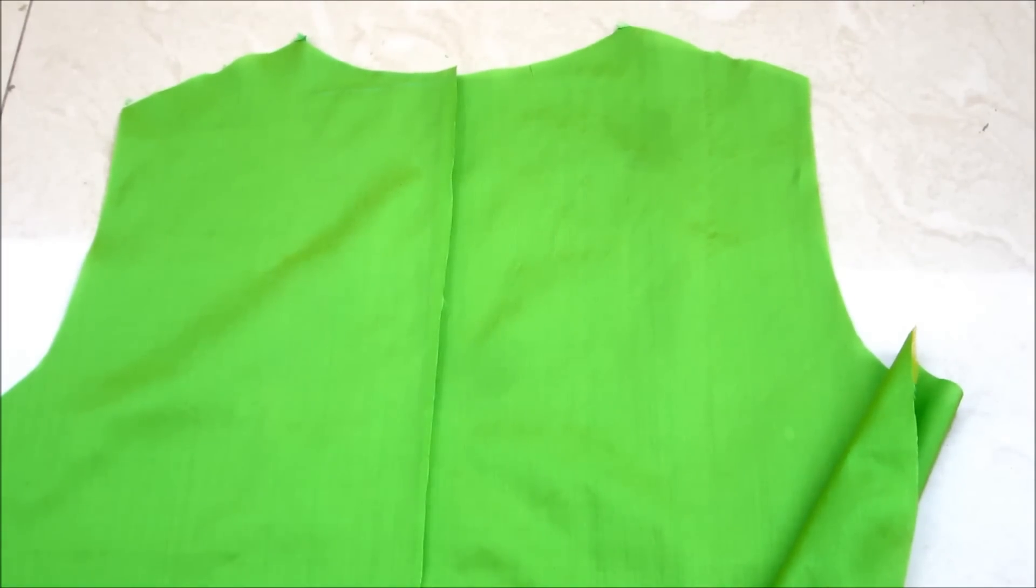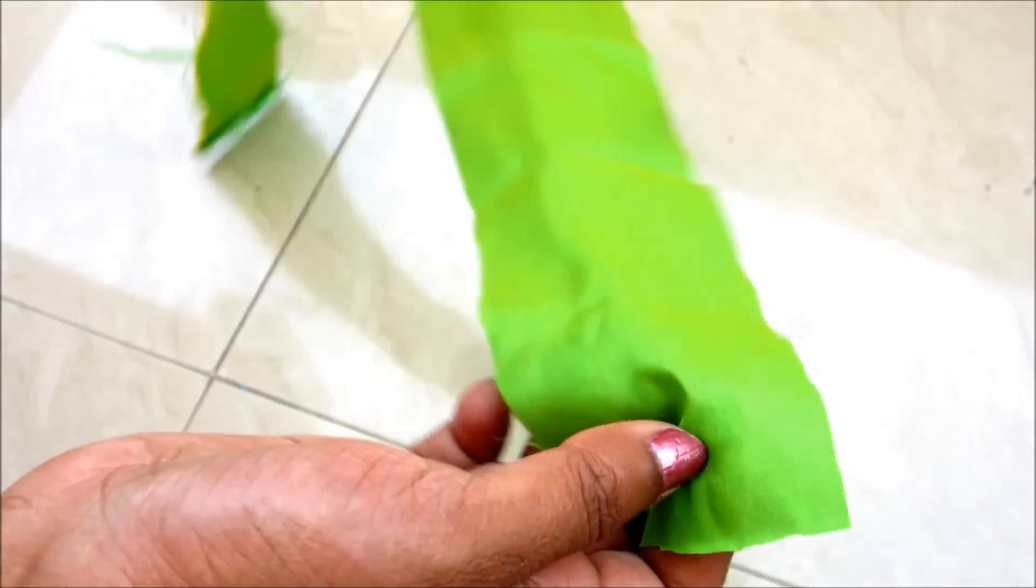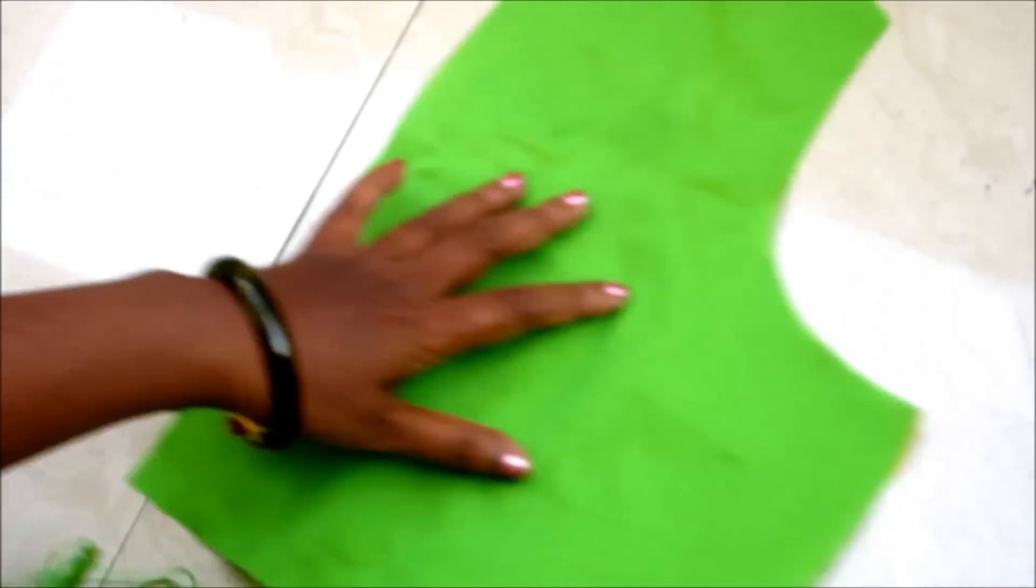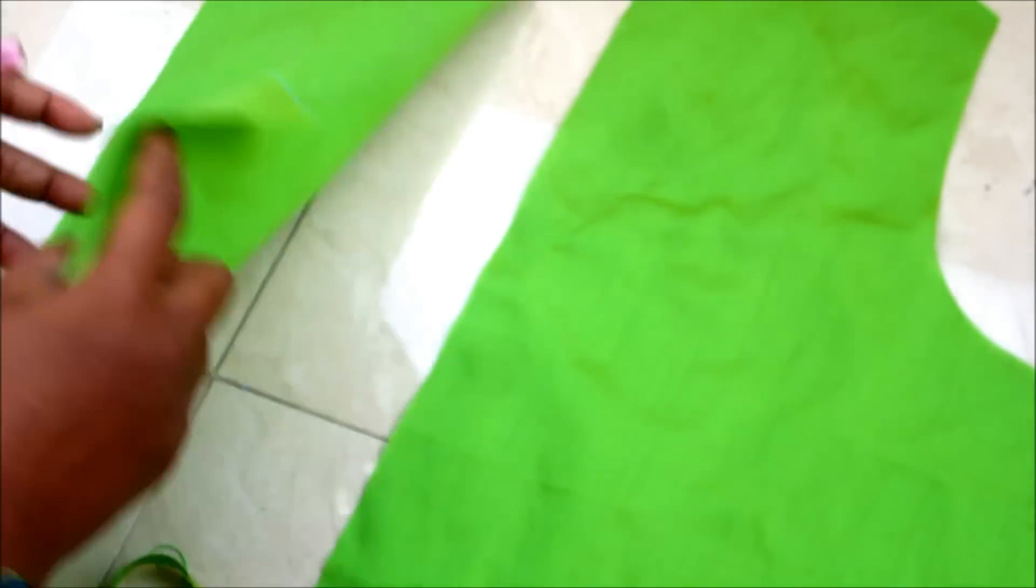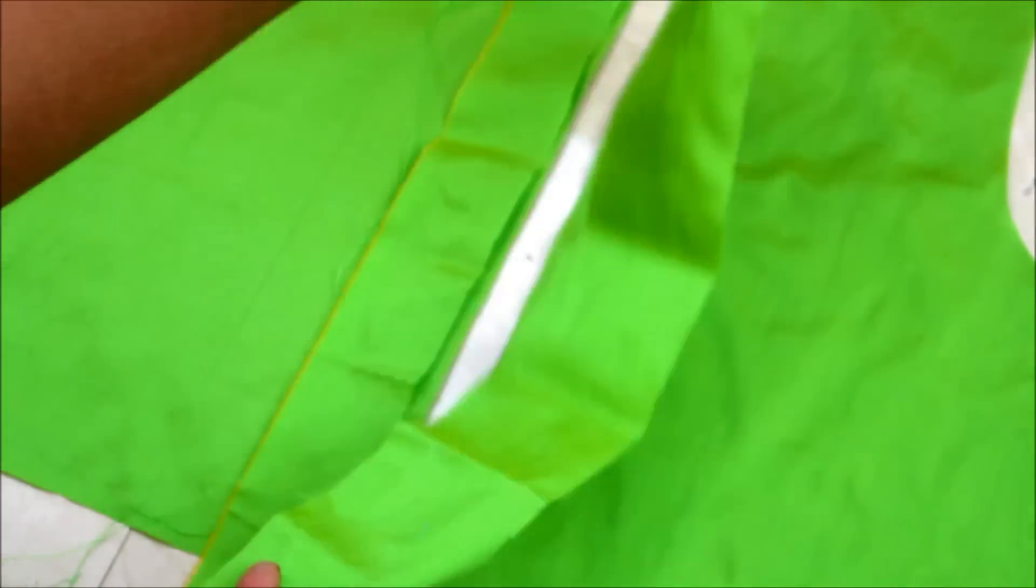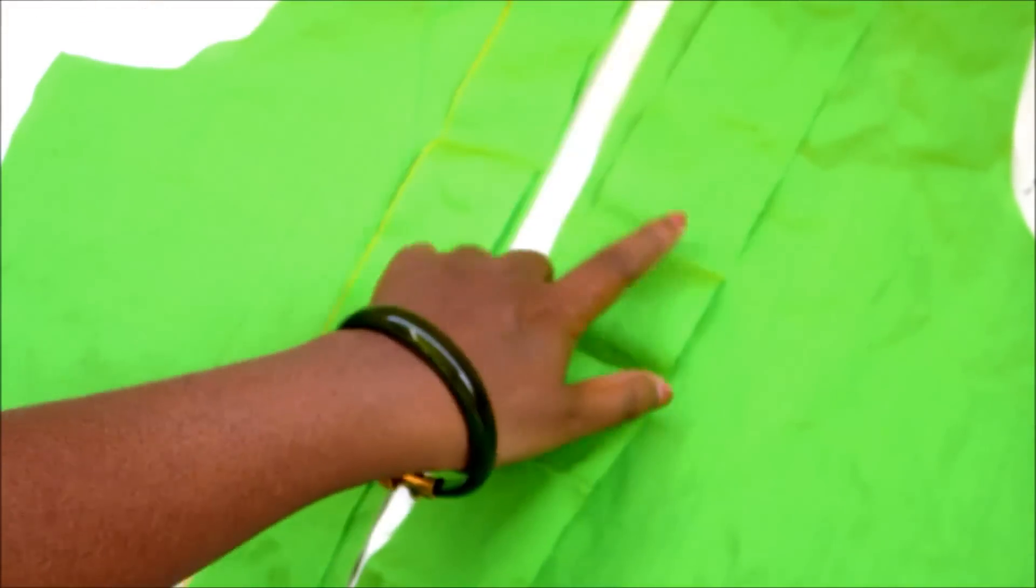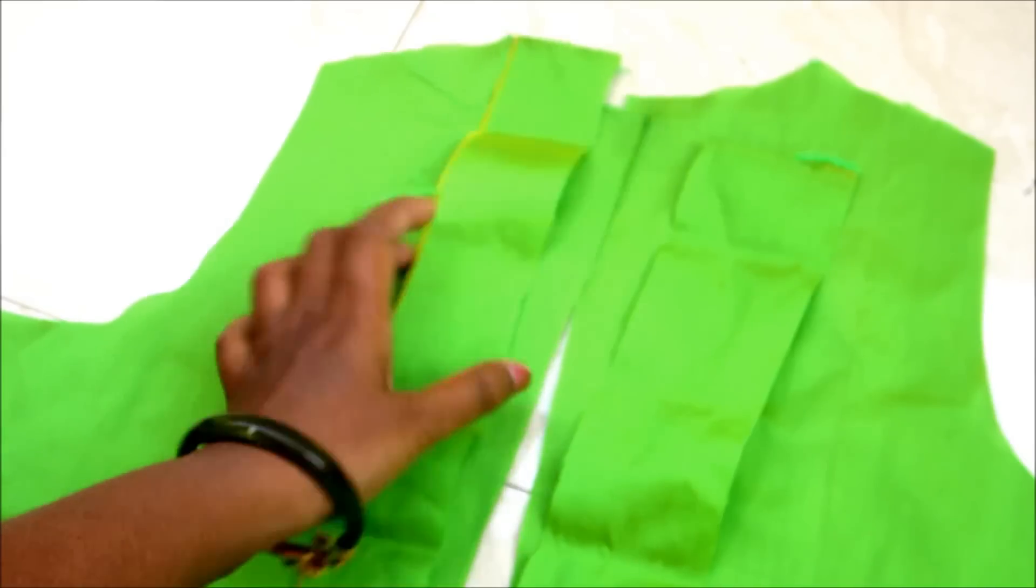Now I'll be joining the strips for hook and eyes. Place the one inch strip on the left side and two inches strip on the right side and join both towards the center slits. So I have joined both strips.